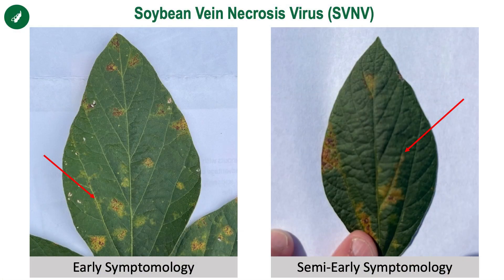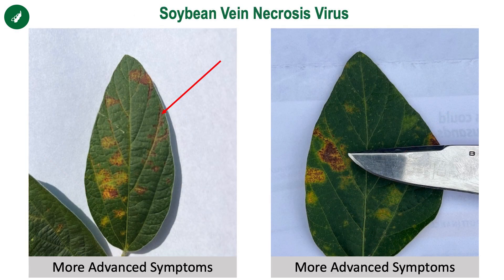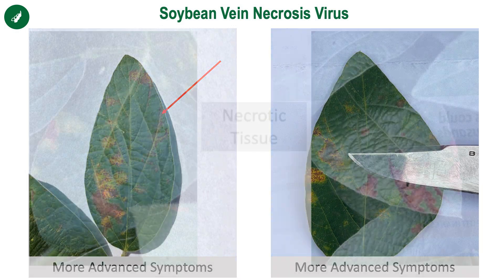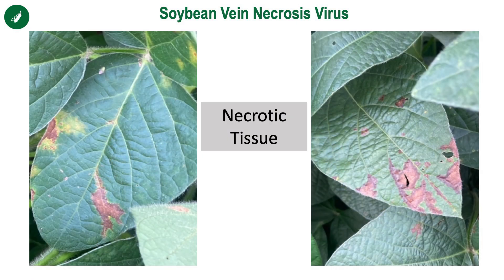One of the keys to identifying whether you have soybean vein necrosis or brown stem rot or sudden death is identifying where the yellowing begins. Just like the name soybean vein necrosis, the yellowing of this particular disease begins by traveling the veins themselves, and then eventually that yellowing migrates to the surrounding tissue, turning to more of a browning — even a red-brown discoloration in necrotic tissue.